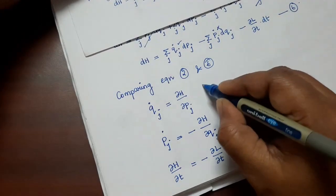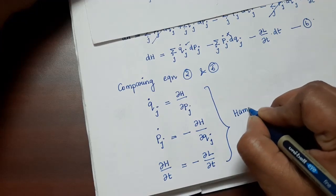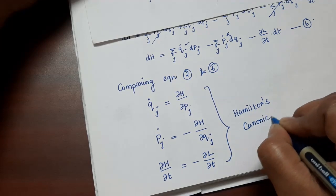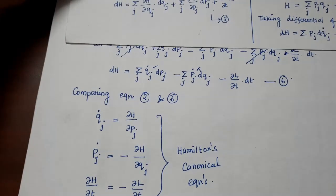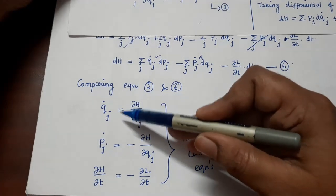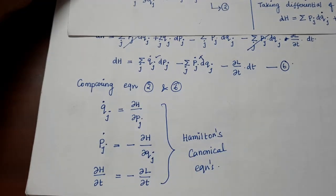This set of three equations is called Hamilton's canonical equations. These equations are highly useful compared to Lagrange's equations, because Lagrangian equations are second-order differential equations, whereas Hamilton's equations are a set of two first-order differential equations, which makes the problem simpler.